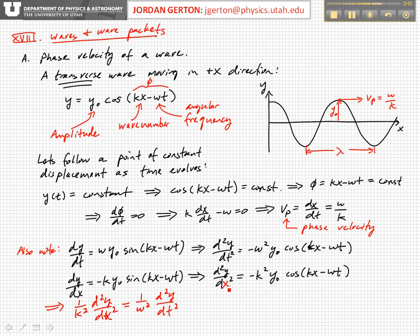And so what we find is that the second derivative of the wave with respect to position minus k squared over omega squared times the second derivative with respect to time of the wave is equal to zero. And this is called the wave equation.